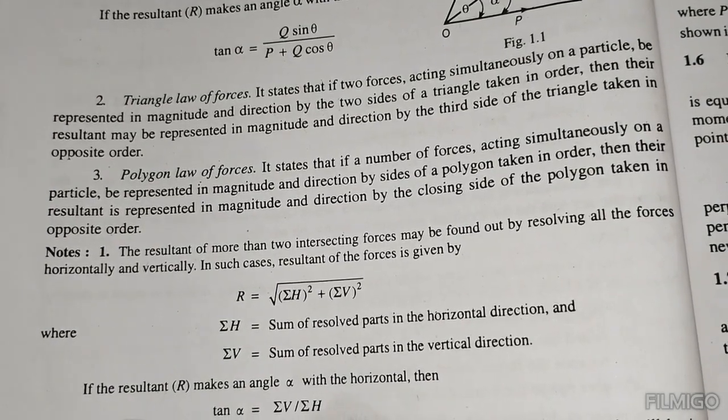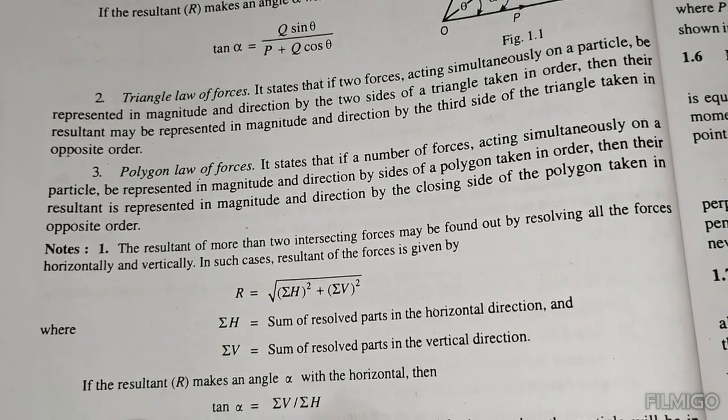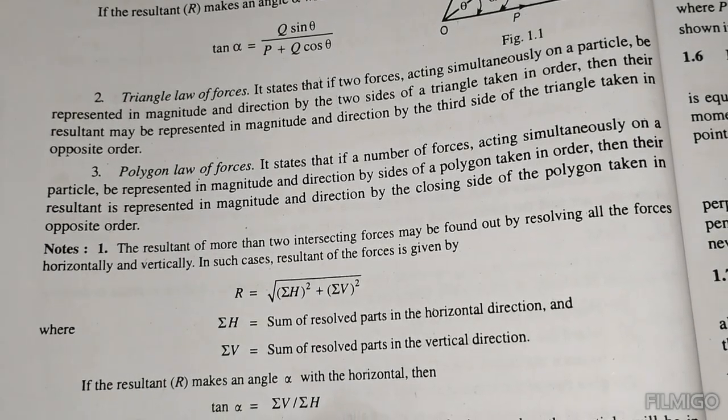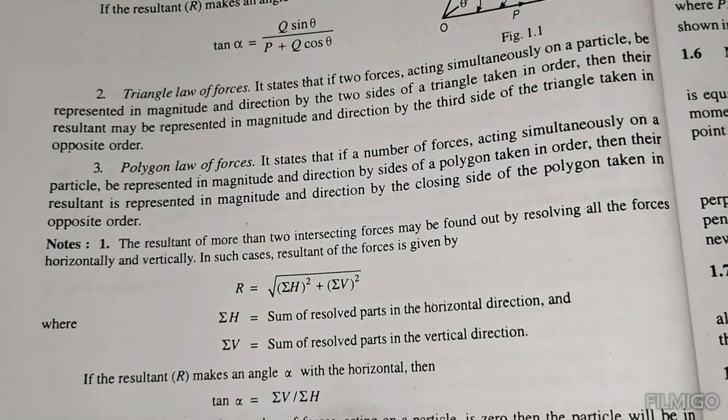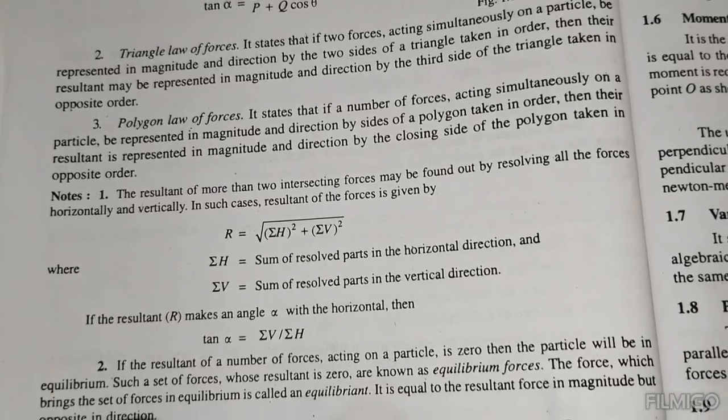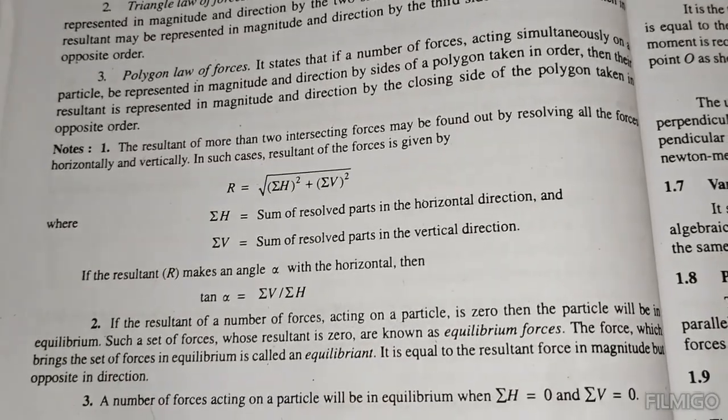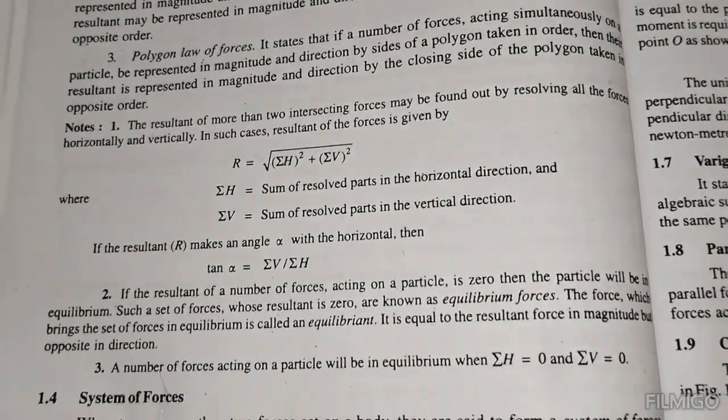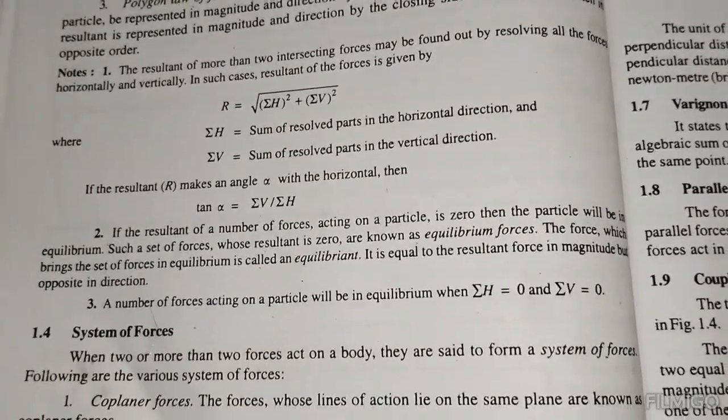By the polygon law of forces, the resultant R equals the square root of the sum of horizontal components squared plus the sum of vertical components squared. The angle alpha is given by tan alpha equals sigma V divided by sigma H.